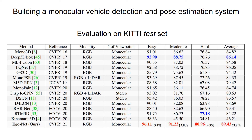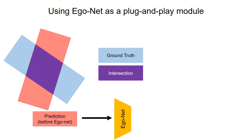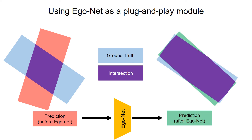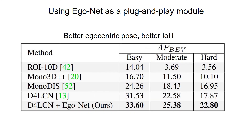We built a monocular vehicle detection and pose estimation system based on EgoNet, which achieves state-of-the-art performance on the KITTI test set. Our system using only one camera can even compete with stereo systems. EgoNet can be used as a module incorporated into existing 3D object detection systems. Given a predicted 3D bounding box, one can crop the region of interest and feed it to EgoNet to obtain a prediction with refined vehicle pose. We tested combining EgoNet with M3DRPN and D4LCN and found that using EgoNet consistently improves vehicle pose estimation performance. A correct vehicle pose can result in a larger intersection over union than a wrong one, and we found improved bird's-eye-view average precision by combining a one-stage 3D object detector with EgoNet.